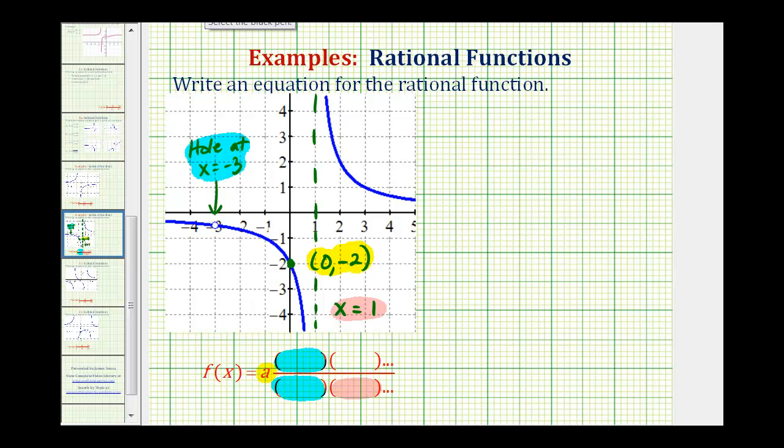So let's begin to set this up. We'll have f of x equals a. We'll find a in the next step. Times a rational function. And let's begin with the information about our hole.